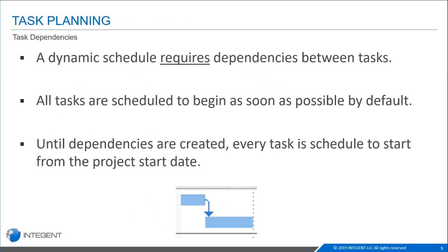Dependencies are required to make your schedule dynamic — they give you the most out of Microsoft Project's powerful scheduling engine. Without creating connections between your tasks, you're not really letting Microsoft Project do its job; it can essentially be an Excel spreadsheet. All tasks are scheduled to begin as soon as possible by default. There are four different kinds of dependencies, with the most frequent being the finish-to-start relationship, meaning a task can start only when the preceding one finishes.